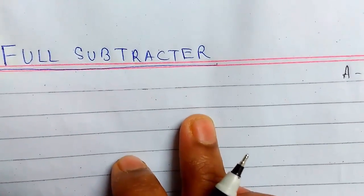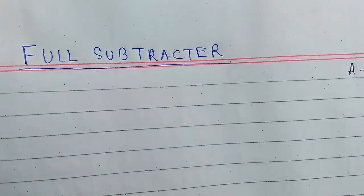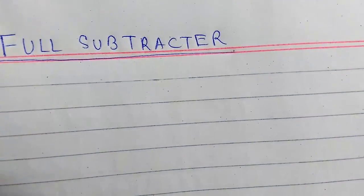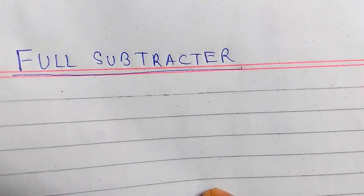of the three binary digits—the minuend, subtrahend, and borrow in—the difference and borrow out are generated. The borrow out is then transferred to the next stage of subtraction.